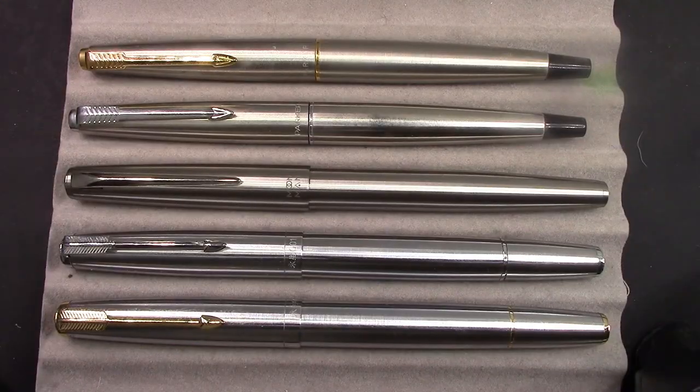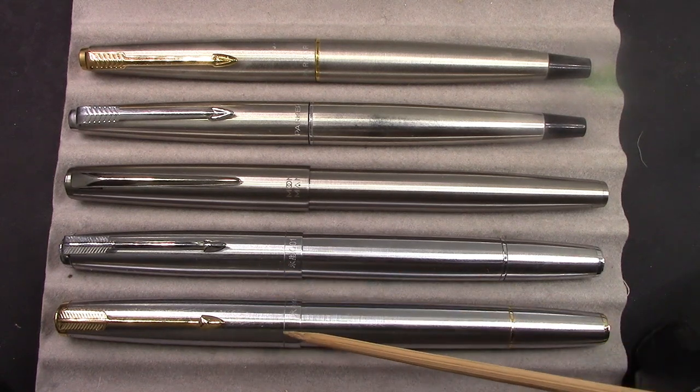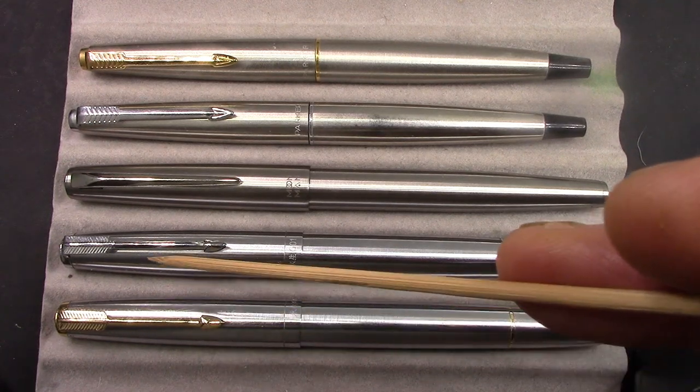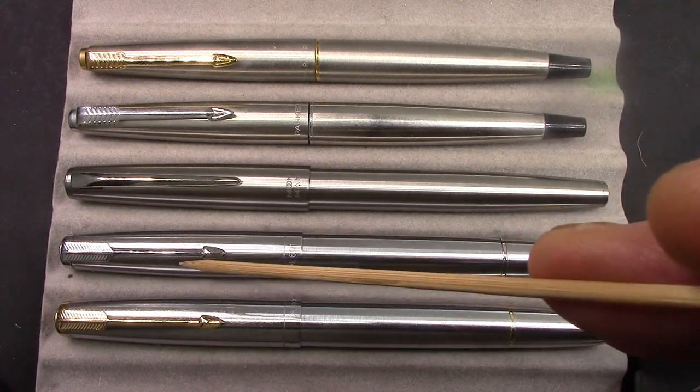Colors are all a little bit different, but that's influenced by the finish. This one's like a tumbled finish, this one's a polished finish, and this is kind of in between those two. So let's compare it to some other metal pens of similar design.